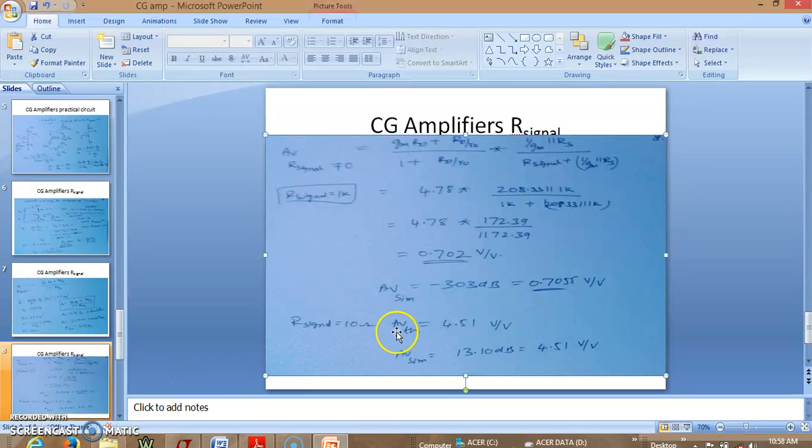Now with r signal as 10 ohm, we have simulated and got the value as 13.10 db. The corresponding volt per volt gain is 4.51. So this way we can get the simulation of cg amplifier for different values of r signal.